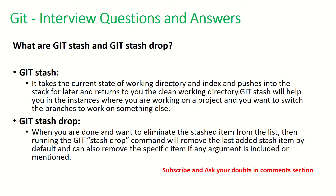The next question is: what are git stash and git stash drop? Git stash takes the current state of the working directory and pushes it onto a stack for later, returning you a clean working directory. Whereas git stash drop — when you are done and want to eliminate the stashed item from the list — you run the git stash drop command. It's not encouraged to use git stash drop often; instead always use git stash.